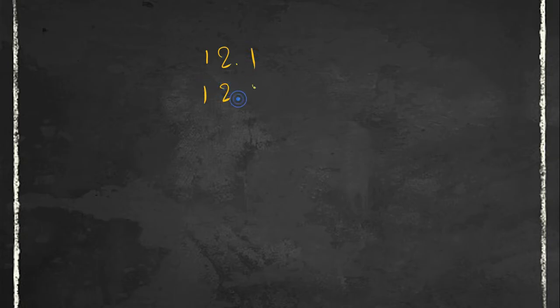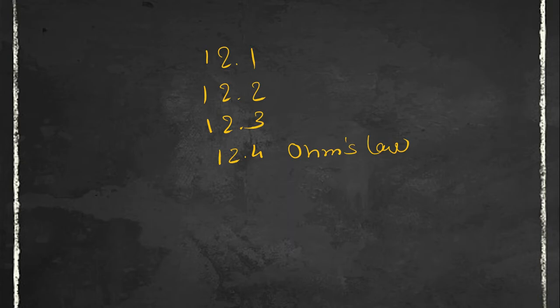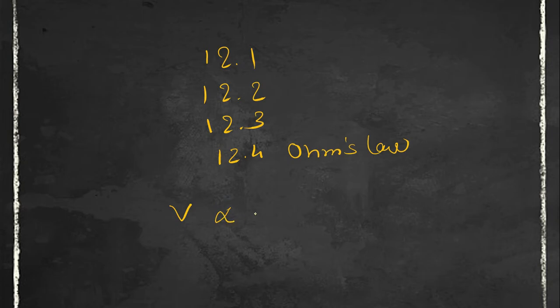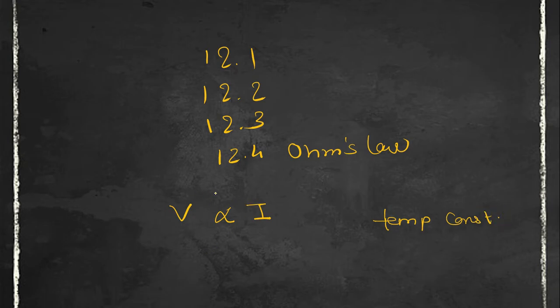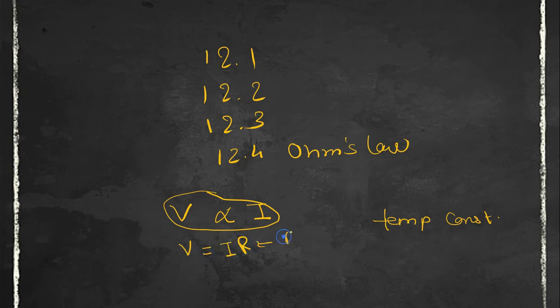In my previous video lectures I had covered sections 12.1, 12.2, 12.3, and 12.4, that is Ohm's Law. If you want to watch those, click the 'i' button. Before starting this video, let us do a quick revision of Ohm's Law. Ohm's Law states that the potential difference V across the ends of a given metallic wire in an electric circuit is directly proportional to the current flowing through it, provided its temperature remains constant. So V is directly proportional to I, and we can rewrite this as V = IR, where R is resistance.